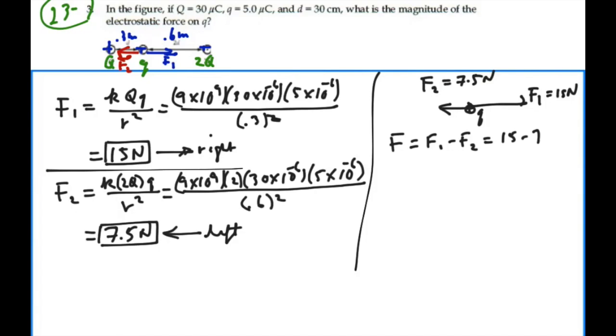7.5 newtons to the right. So that is the magnitude of the electrostatic force on charge little q, 7.5 newtons. If I wrote this as a vector, this would be 7.5i newtons. Magnitude 7.5 newtons. Thank you.